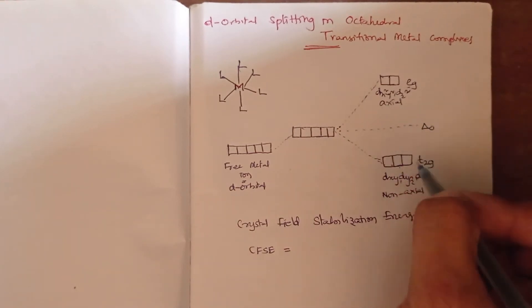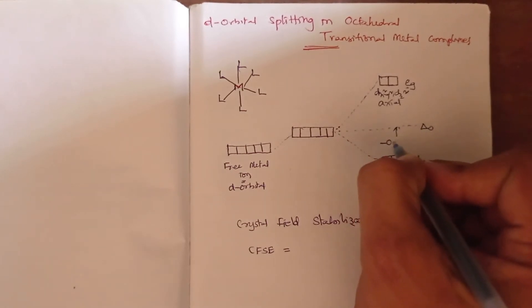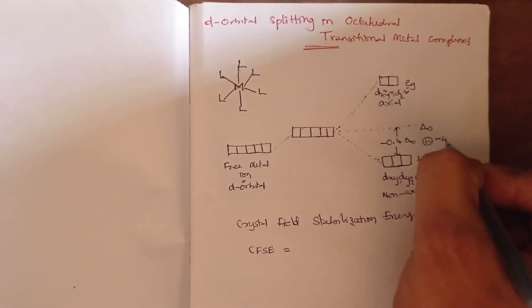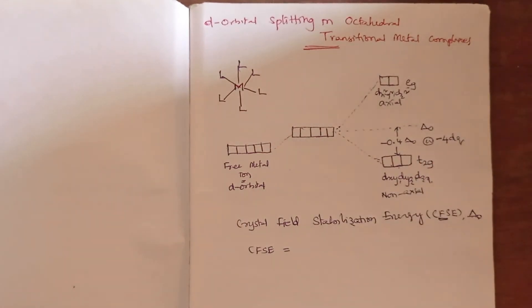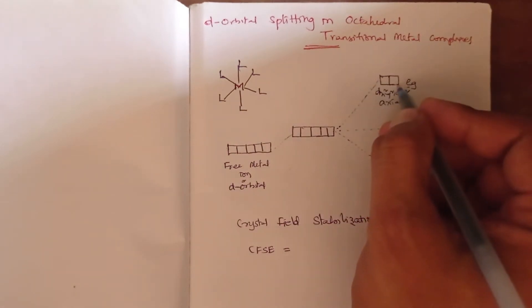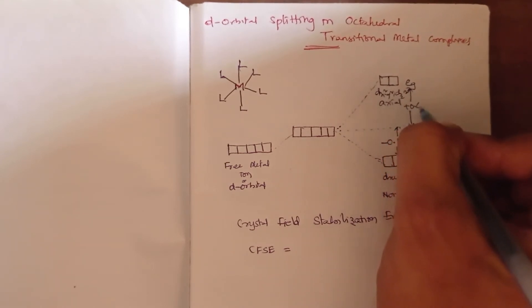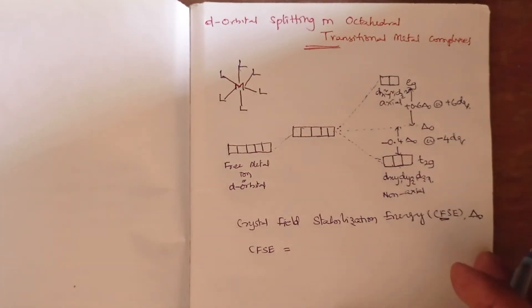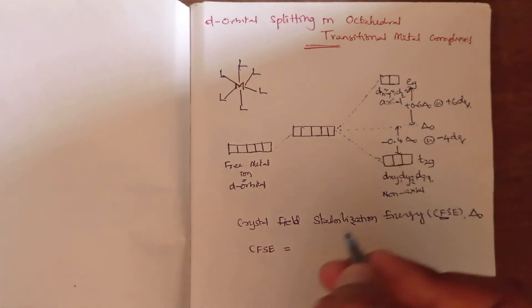The CFSE of an octahedral complex can be calculated as follows: the energy difference from the zero state to the lower energy level is −0.4Δo, which can also be written as −4Dq. The energy of the higher energy state is +0.6Δo, or +6Dq.